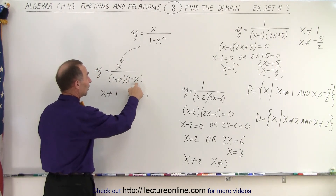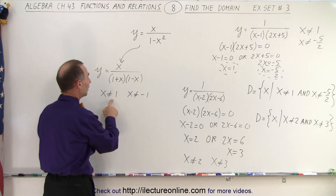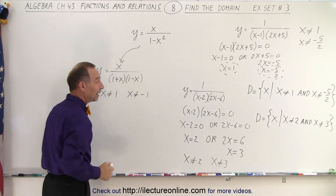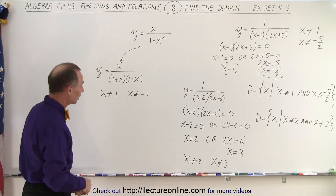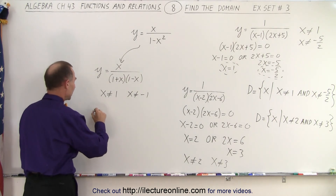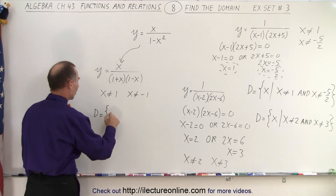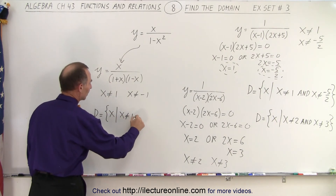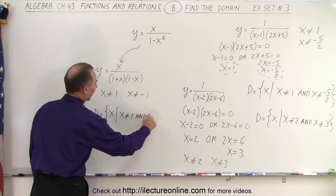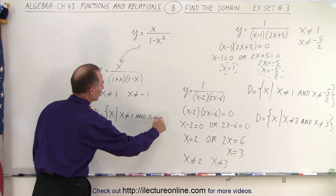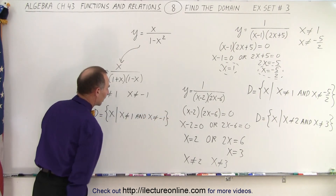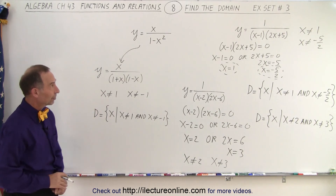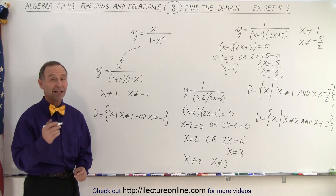Either one of those makes the denominator 0. That means the domain is the set of all x's such that x is not equal to 1 and x is not equal to negative 1. And there you go — that is how we find the domain in these particular cases.